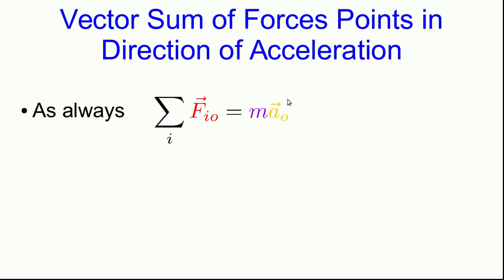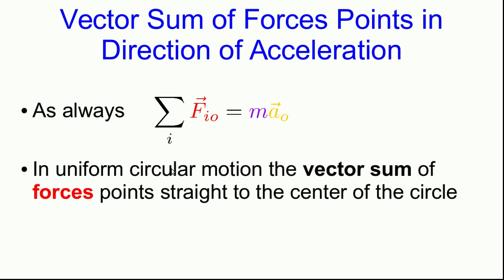Well, we've seen that this acceleration points straight to the center of the circle if an object is going around a circle at constant speed, and that this acceleration magnitude is constant. And so in uniform circular motion, the vector sum of all the forces acting on the object must be straight to the center of the circle, and furthermore, the magnitude of the vector sum must be constant.